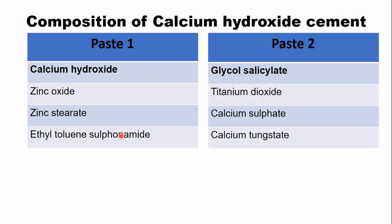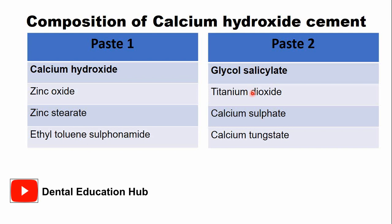Paste two comprises glycol salicylate, which is a non-steroidal anti-inflammatory agent that controls inflammation. Besides this, paste two contains titanium dioxide, calcium sulfate, and calcium tungstate, which give the cement radio-opacity and also give the paste a particular color.